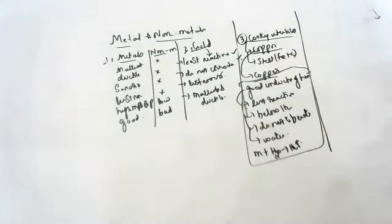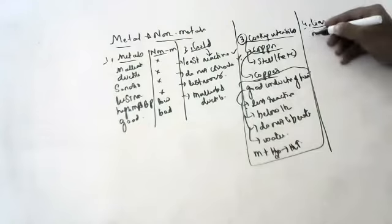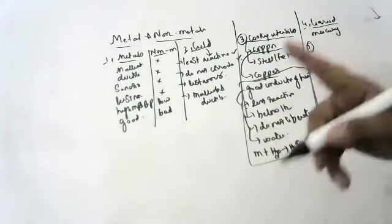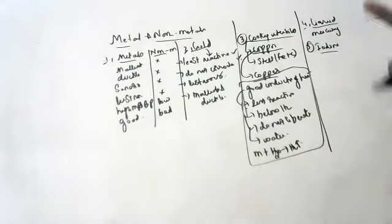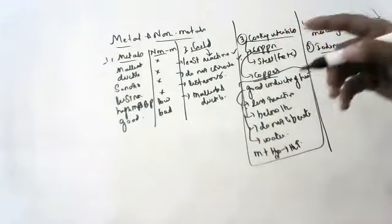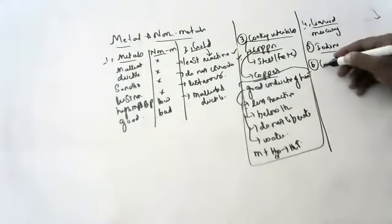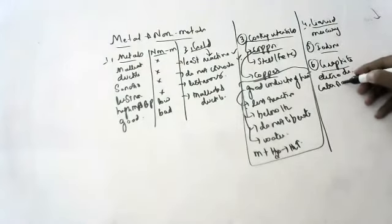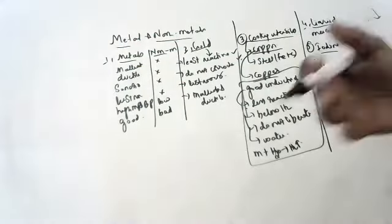Not all metals exist in solid state at room temperature - give an example of a liquid metal. Mercury. Next, name a non-metal which is lustrous. Iodine - normally non-metals are non-lustrous, but iodine is lustrous. Name a non-metal which conducts electricity: graphite. Graphite is a good conductor of heat and electricity, which is why it is used as an electrode. The anode is connected to the positive terminal and the cathode to the negative terminal.